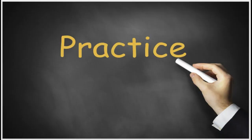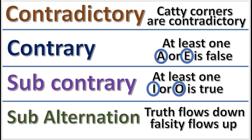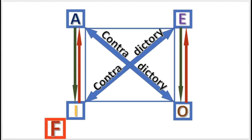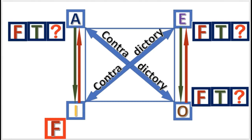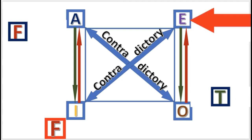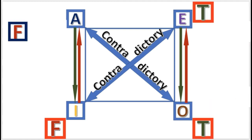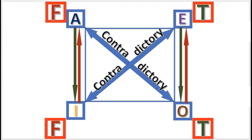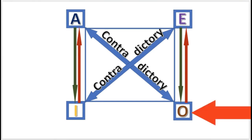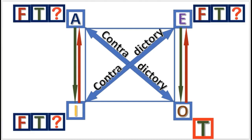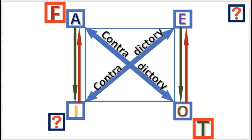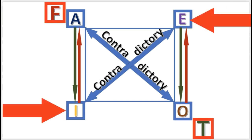Practice problem one: If I is false, what are the other truth values? The answer: E is true, O is true, and A is false. Next practice problem: If O is true, what are the other truth values? The answer: A is false, and E and I are undetermined.